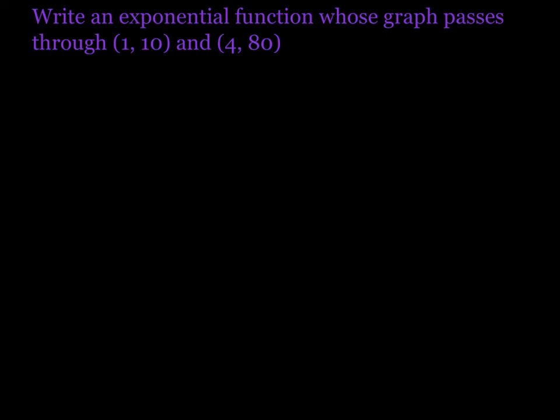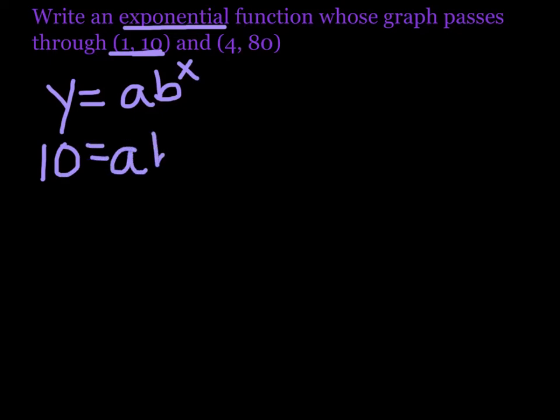Write an exponential function whose graph passes through (1,10) and (4,80). So first you have to be able to recognize that it says exponential. So you have to know, okay, I'm going to use y equals ab^x. Remember, x is your exponent. So then I'm going to take the ordered pairs that I have. We'll start with (1,10), and we're going to plug it in. 10 equals a times b to the 1.